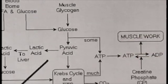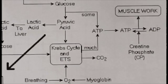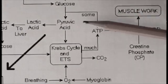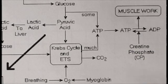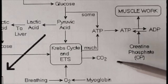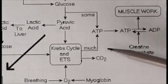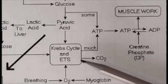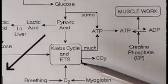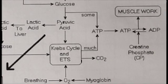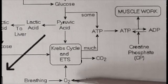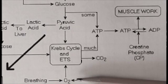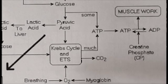A lot more ATP comes from the breakdown of pyruvic acid through the steps of the Krebs cycle and the electron transport system, which generates a lot of ATP. This is the rest of cellular respiration. There are some drawbacks to that — a major one is that oxygen is required.